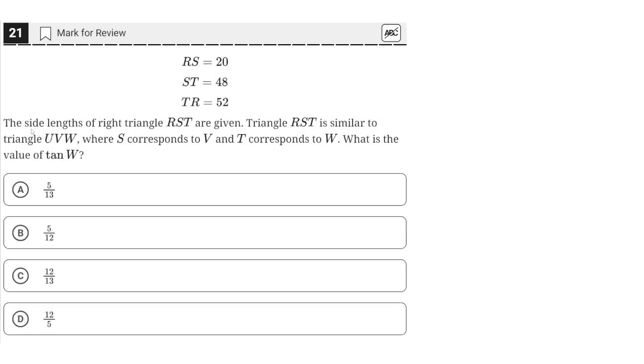The side lengths of right triangle RST are given. Triangle RST is similar to triangle UVW, where S corresponds to V and T corresponds to W. What is the value of tan W?